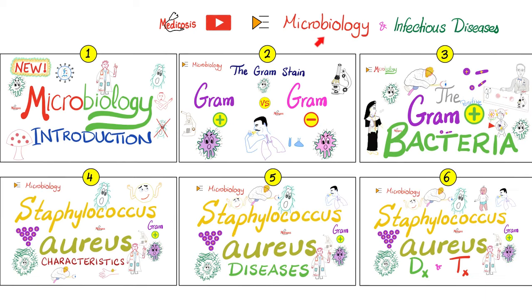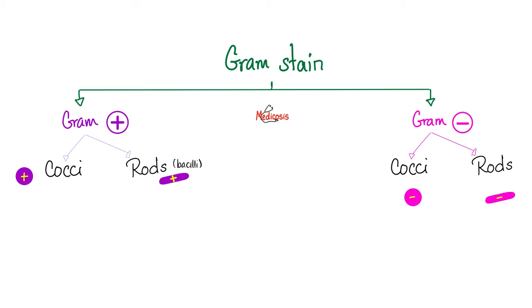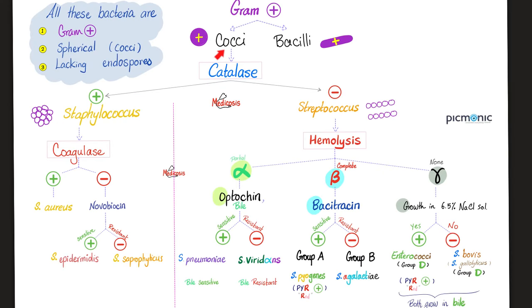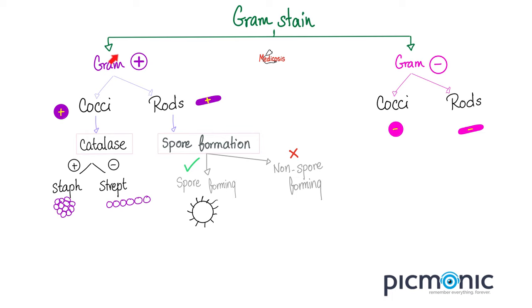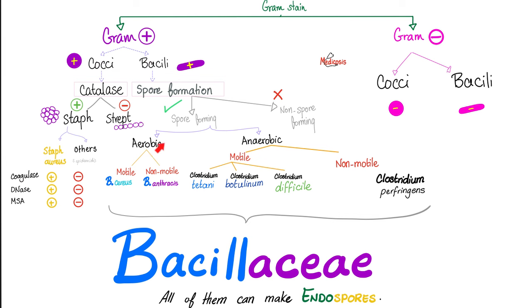Please watch the videos in this microbiology and infectious disease playlist in order. We're talking about a gram-positive rod. As for the gram-positive cocci, we talked about them before. Now we're focusing on rods. Bacillus anthracis is a gram-positive rod that is spore-forming and aerobic, but non-motile.